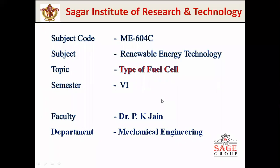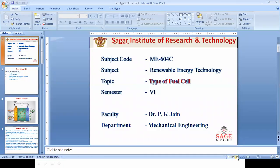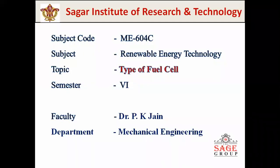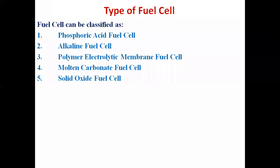Good morning students. In today's lecture we will discuss different types of fuel cells and fuel cell power plants. In the last lecture we discussed the classification of fuel cells, including alkaline fuel cell, phosphoric acid fuel cell, polymer electrolyte membrane fuel cell, molten carbonate fuel cell, and solid oxide fuel cell. The operation of fuel cells almost remains the same; the differences lie in the electrolyte used and the construction.